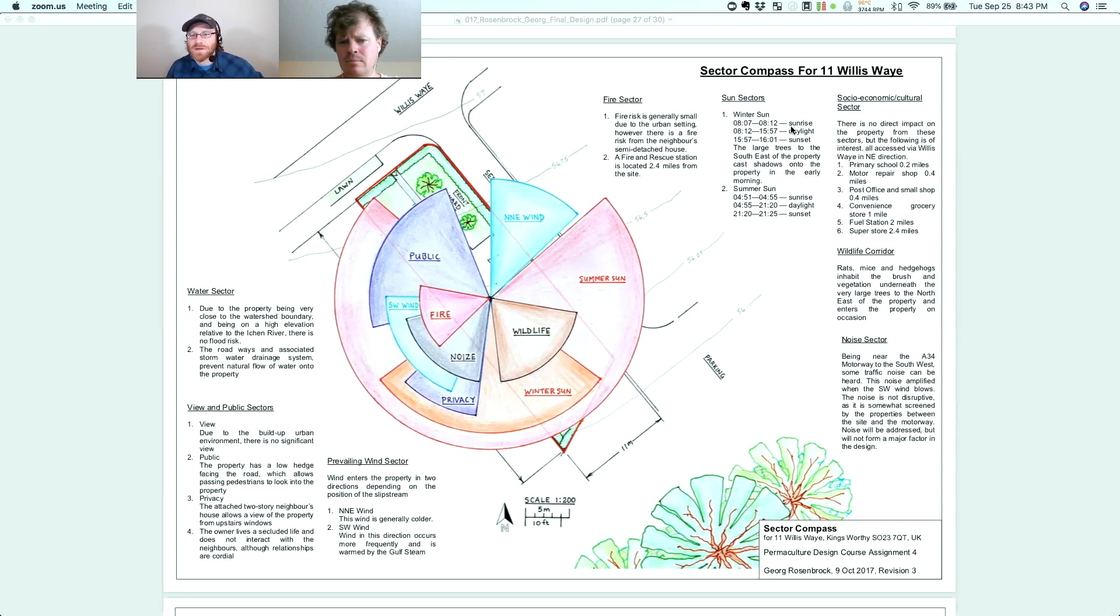We've taken a look at fire risk, usually due to being closer to other buildings, whereas on the northeast side, not so. Also told us a fire and rescue station is located 2.4 miles from the site. Wonderful. Wonderful pieces here. Showed us also some times of sunrise, daylight, sunset. Showed us socioeconomic cultural sectors. So it didn't graphically show us this, but definitely described it.